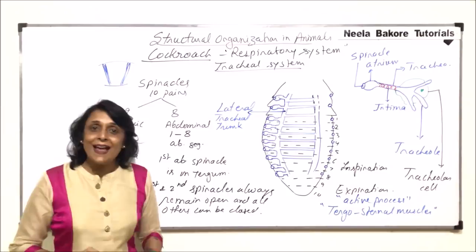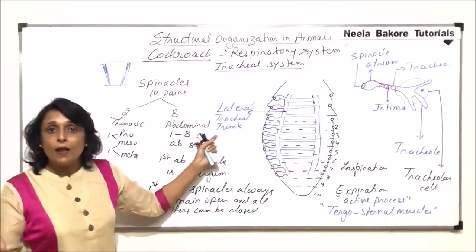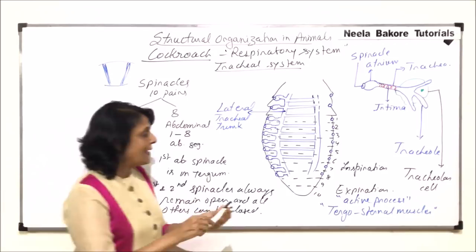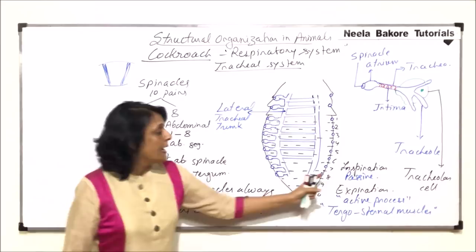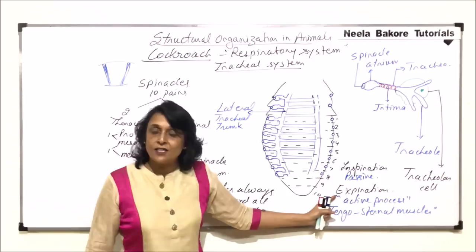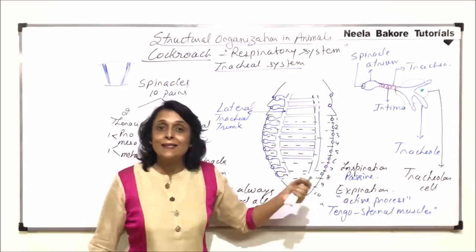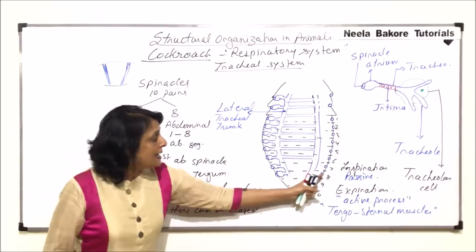After exhalation, these muscles relax. When the muscles relax, the tergum and sternum return to their normal position, volume increases, and pressure decreases, so air from outside comes in. Since no muscle is contracting during inhalation, there is no energy consumption — inspiration is a passive process. This is opposite to what happens in humans, where inhalation is active and exhalation is passive. In cockroach, the tergosternal muscles contract during exhalation, and when they relax, inhalation takes place.